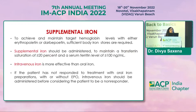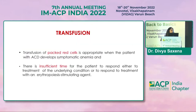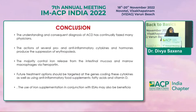Supplemental iron can be given to maintain transferrin saturation and ferritin levels. Intravenous iron is more effective than oral iron, and if patients do not respond to oral iron or to EPO treatment alone, intravenous iron is preferred. Red blood cell transfusion is appropriate when a patient with ACD develops symptomatic anemia or when there is insufficient time for the patient to respond to treatment of the underlying condition or to an erythropoiesis stimulating agent.